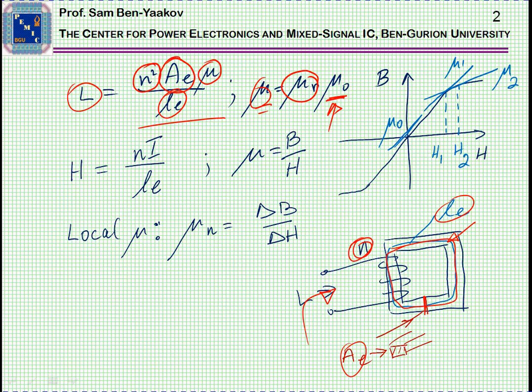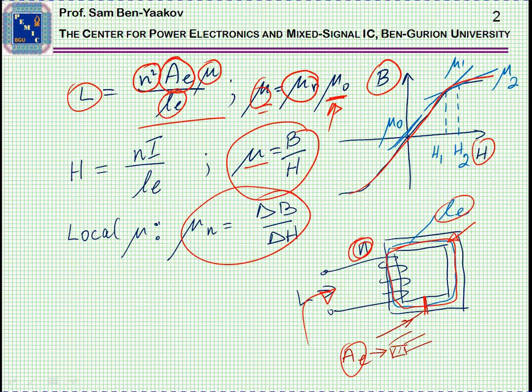The idea is that permeability is actually the ratio between B and H. B is the magnetic flux density, H is the magnetic field, and this is a typical curve that connects the two. Permeability is B over H, but the local permeability, that is at a given point, will be the local slope.